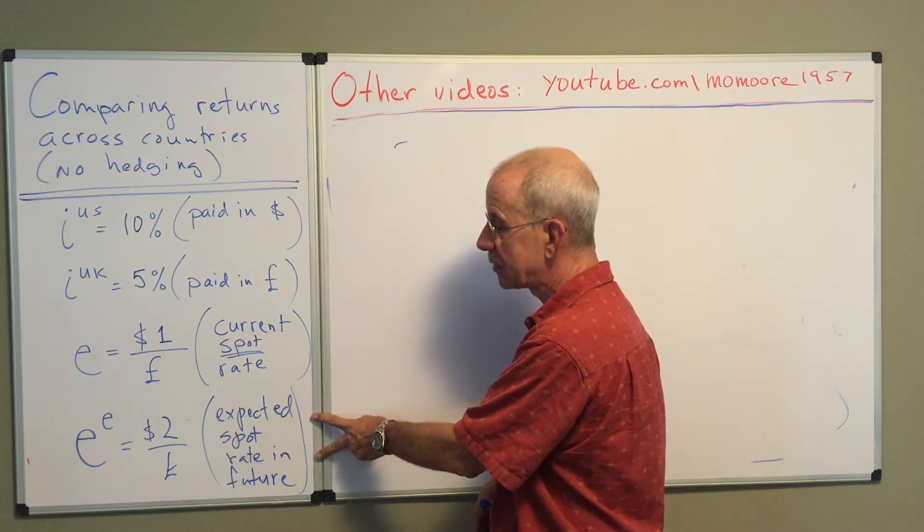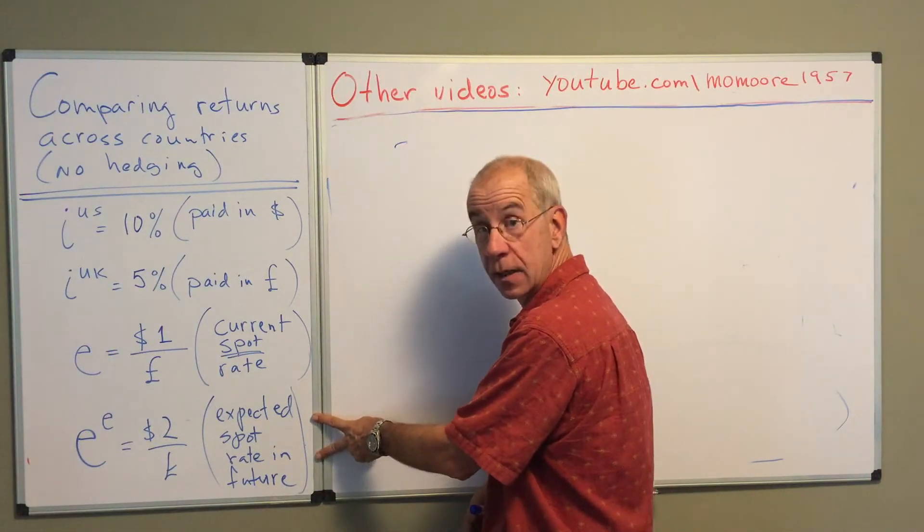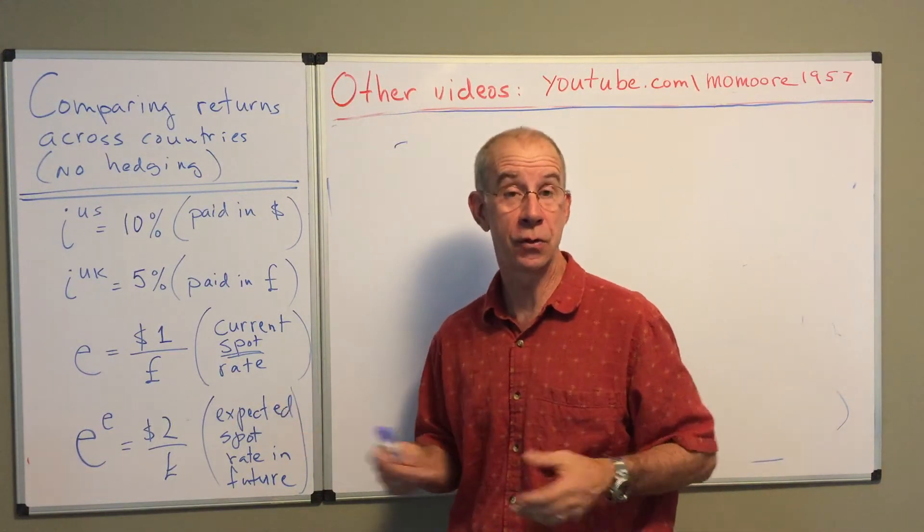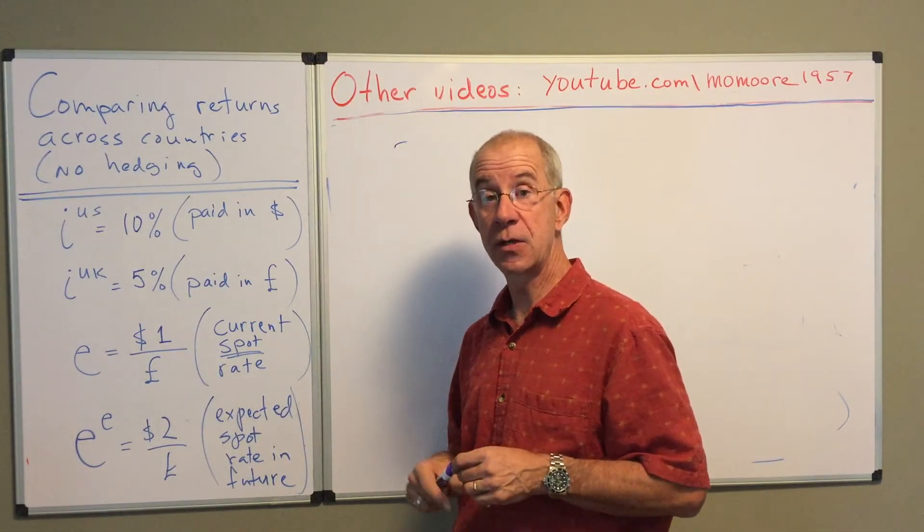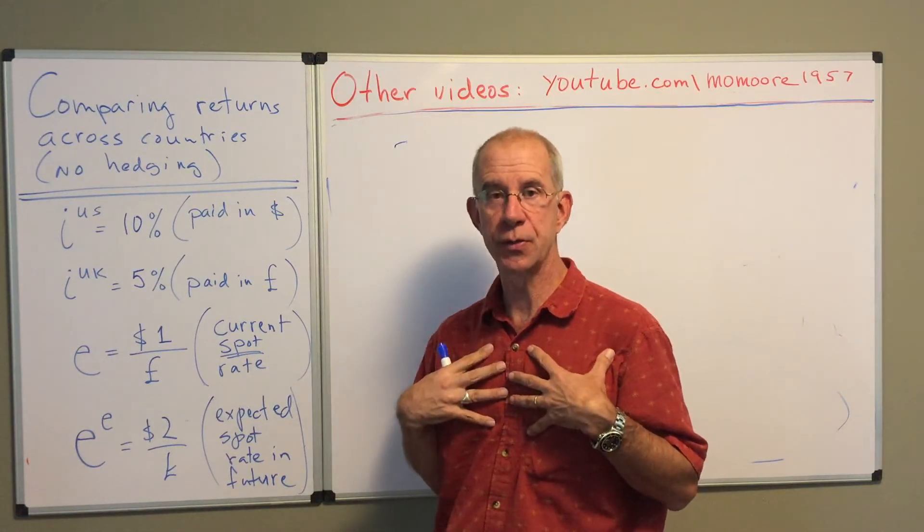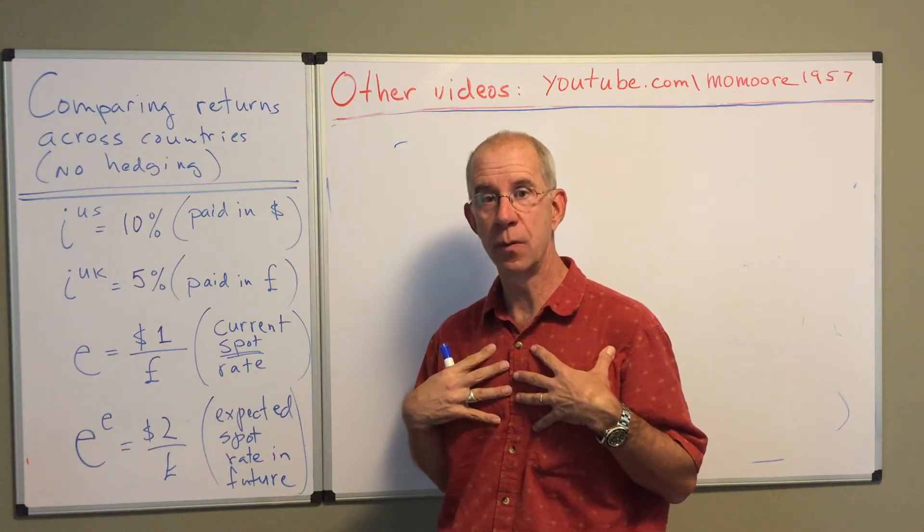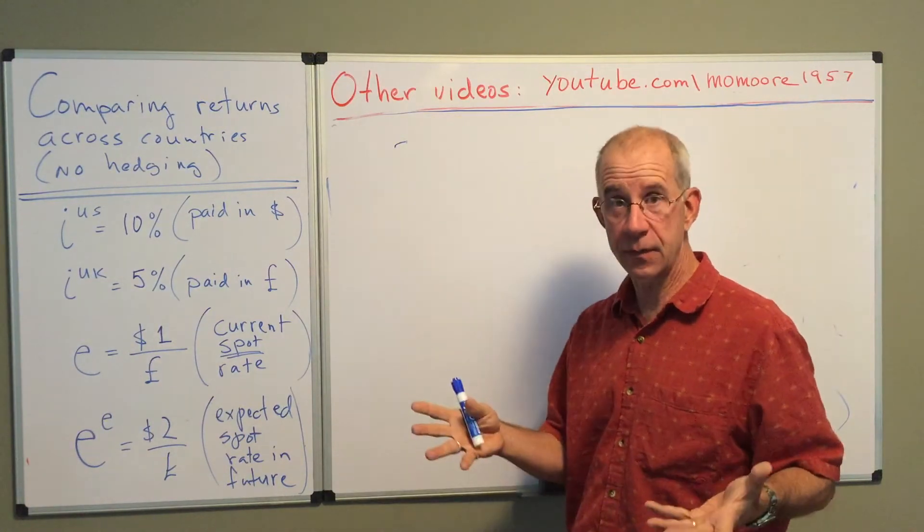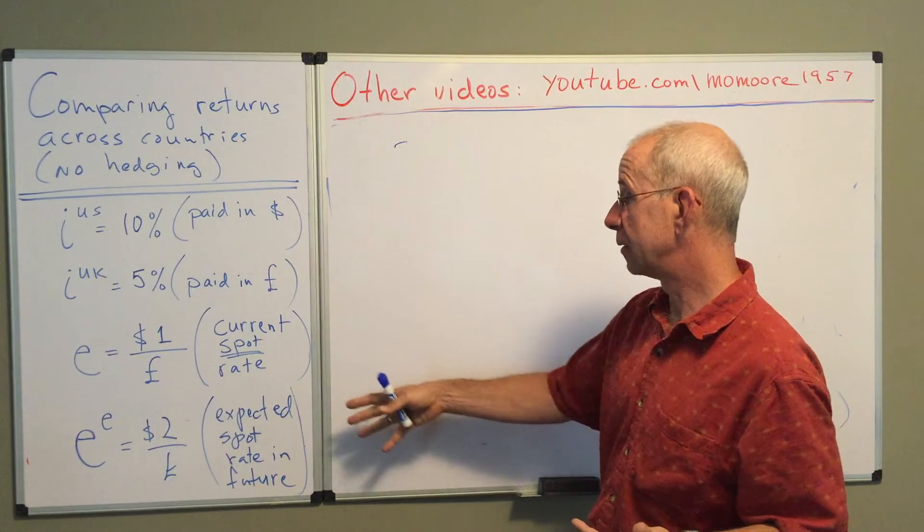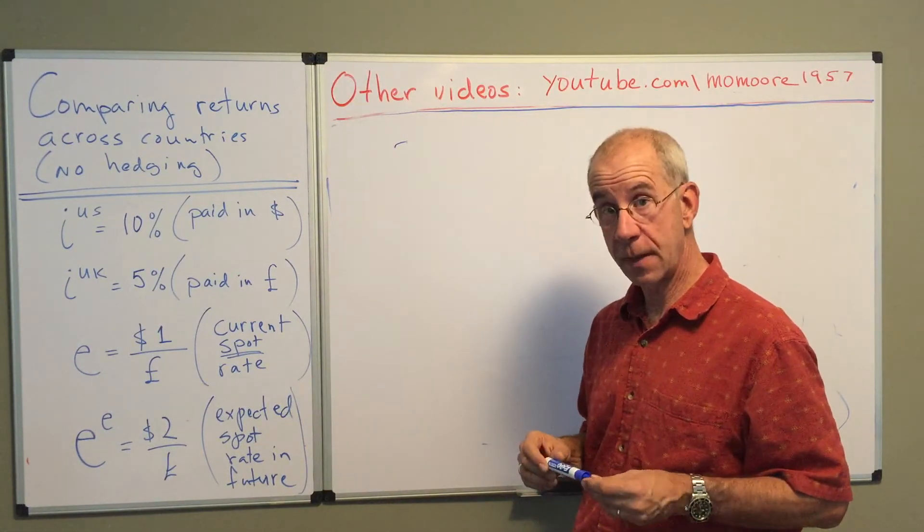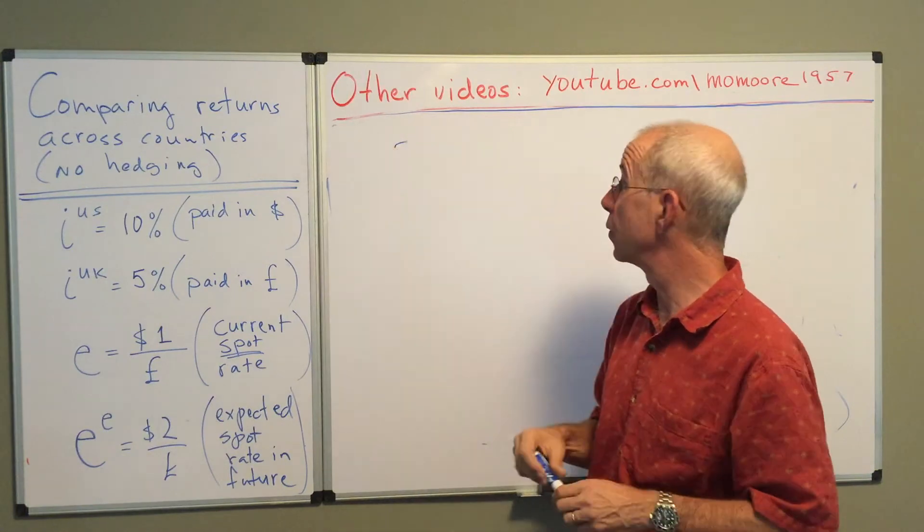And then we have the expected spot rate in the future. Now the expectations about the future path of the exchange rate is ultimately individual decisions, what an individual person would think the exchange rate will be. But let's think of this as what one person might think, and then compare these two returns.